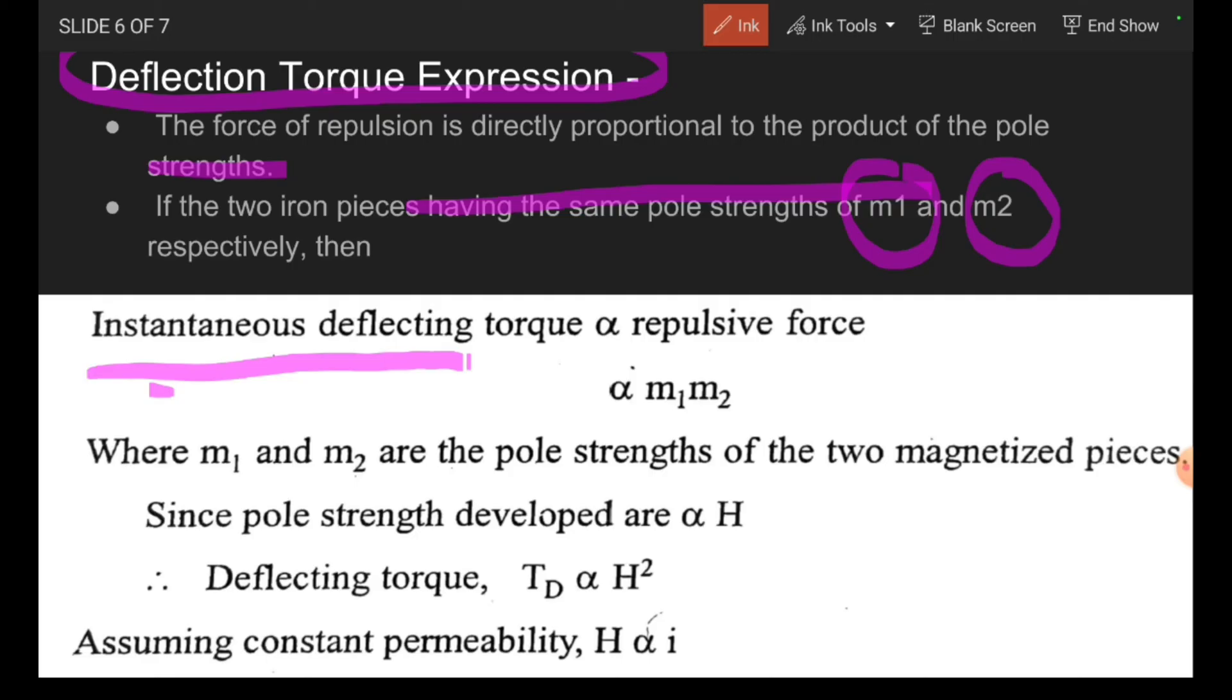Then, instantaneous deflecting torque is proportional to repulsive force. Already you are concluded in the first point that, this repulsive force is proportional to the product of the pole strengths, i.e. M1 and M2, where M1 and M2 are the pole strengths of the two magnetized pieces. Since pole strengths developed are proportional to H.